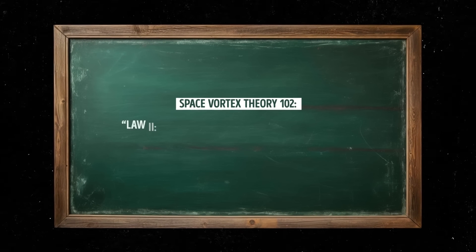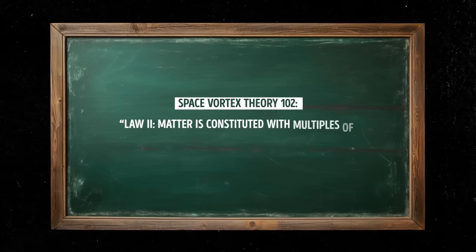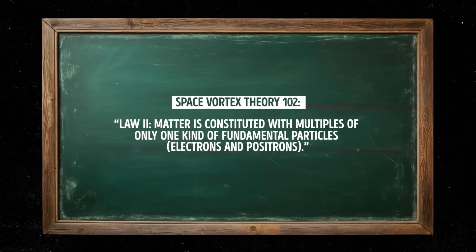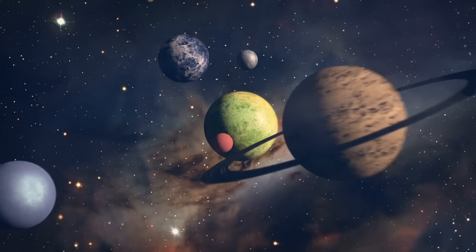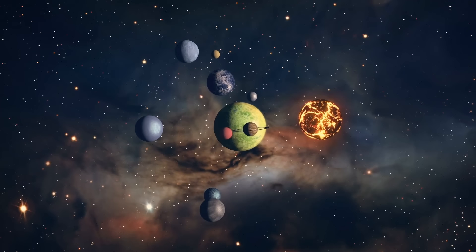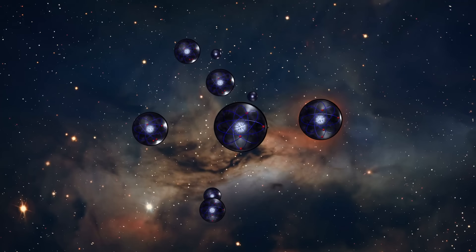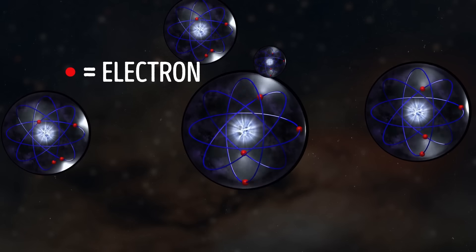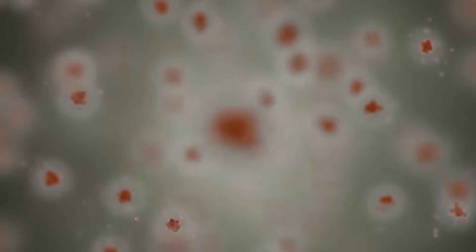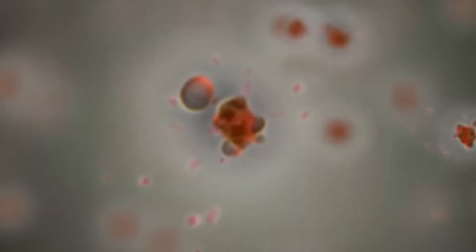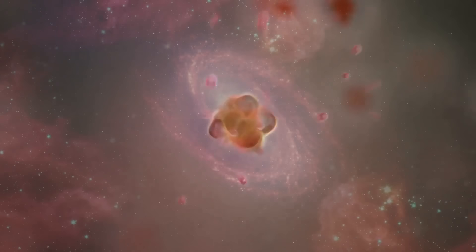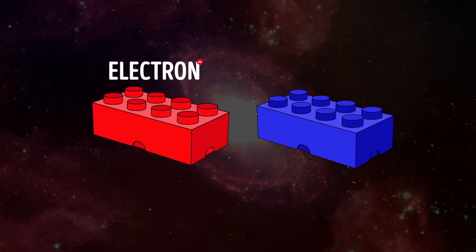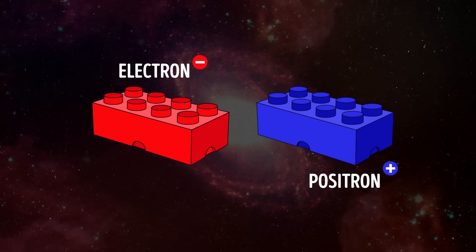Law 2: Matter is constituted with multiples of only one kind of fundamental particle — electrons and positrons. This law states that all matter in the universe is made up of these same fundamental particles. These are the Lego blocks we've talked about before. According to the second law, these tiny invisible particles make up everything from a tiny atom to a giant galaxy — just like no matter what the shape or size our Lego build is, it's still made up of the same building blocks.